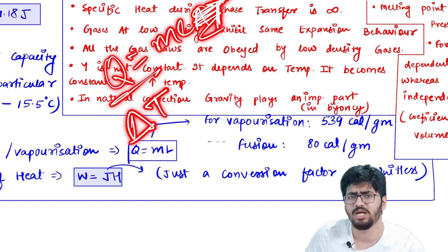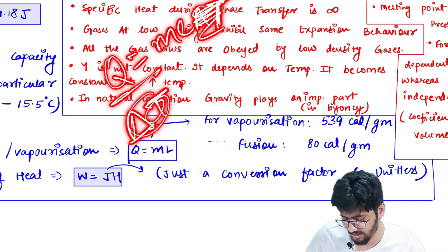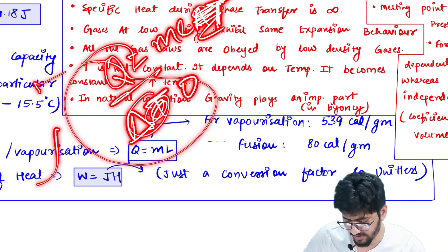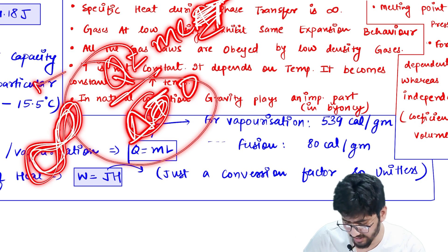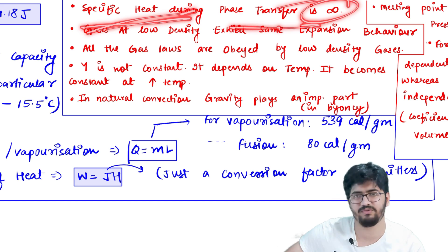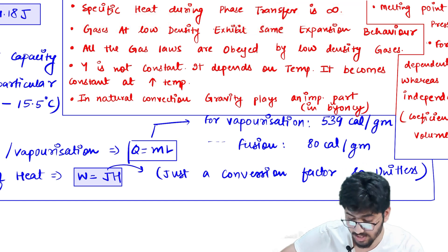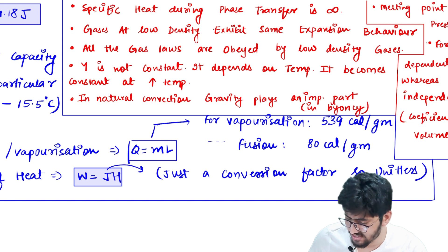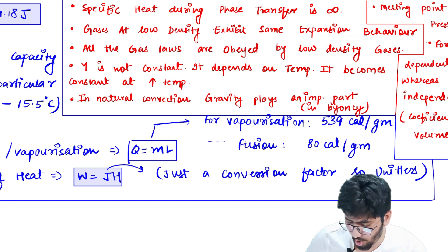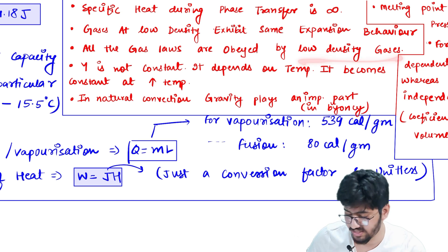If ΔT is zero during a phase transition, then Q = MC·ΔT would make C tend to infinity. This means the specific heat during a phase transition is infinite. Additionally, remember this theoretical point: all gas laws (Charles's law, Boyle's law, etc.) are obeyed by low-density gases. This can be asked in questions.